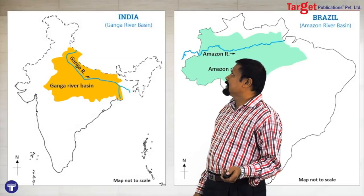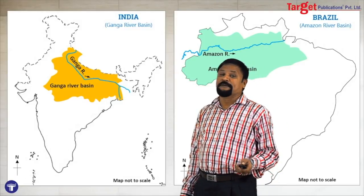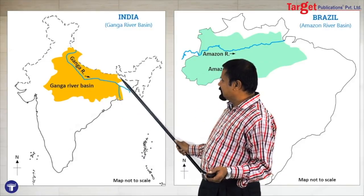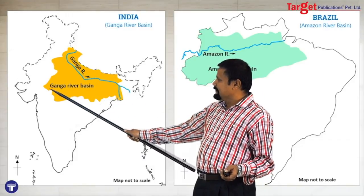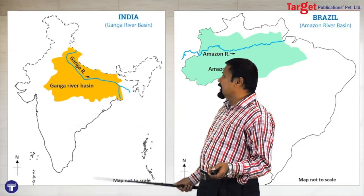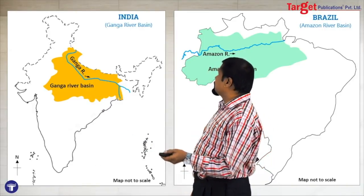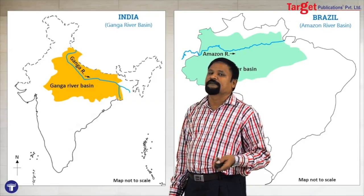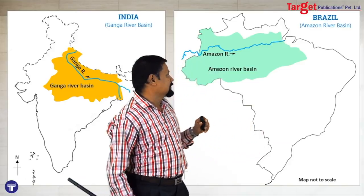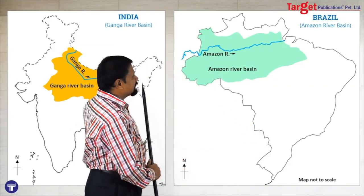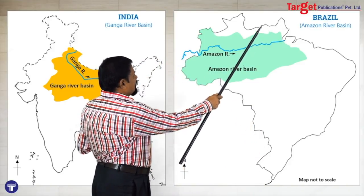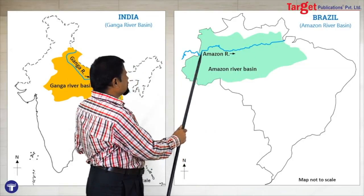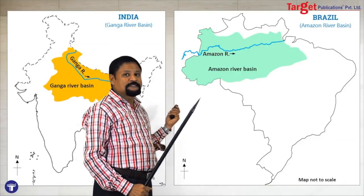There is also a question: compare the population density or urbanization in the Ganga River Basin and the Amazon River Basin. For India, draw the Ganga River and its basin. Then show the Amazon River and its Amazon River Basin for Brazil. You can show both nations in this way.